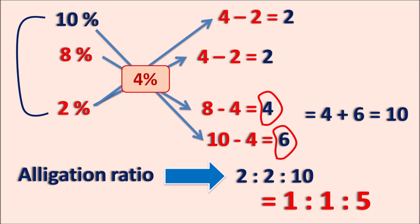So one part of the 10% solution, one part of the 8% solution, and five parts of the 2% solution are to be mixed to produce the 4% solution. Even with three components we apply the same allegation alternate principle, but we apply it two times: first to the two concentrations just above and below the final concentration, then to the very highest and very lowest. The parts obtained at the lower concentration are combined to get total parts, and the allegation ratio is identified.